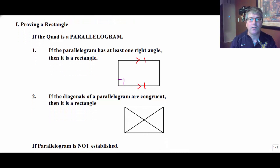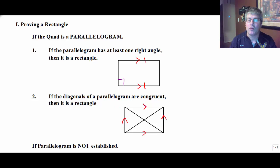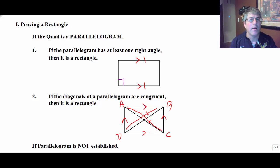A second way to prove something is a rectangle: again, if it's already a parallelogram and we want to prove it's a rectangle. We might have something that looks like this — it's already a parallelogram, say, because both pairs of opposite sides are parallel. Now we have this four-sided figure. It's a parallelogram. If the diagonals of the parallelogram are congruent, then it is a rectangle. So if we could get AC congruent to DB, our parallelogram is now a rectangle.